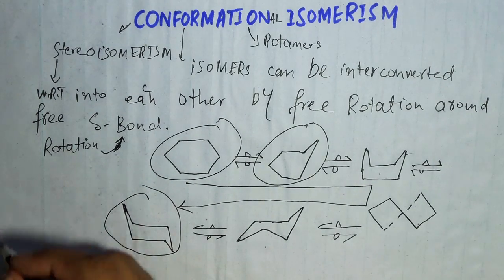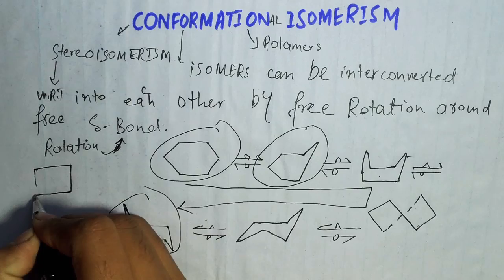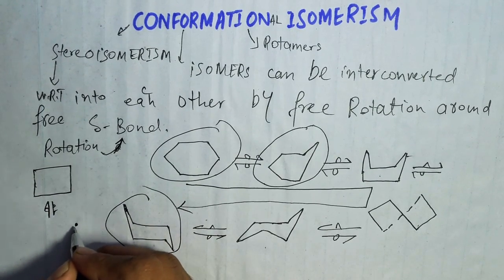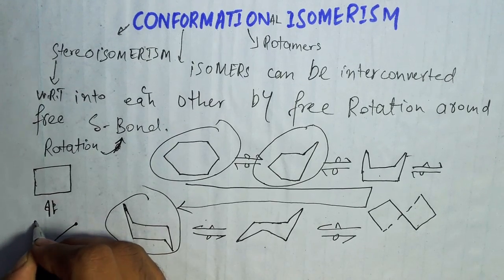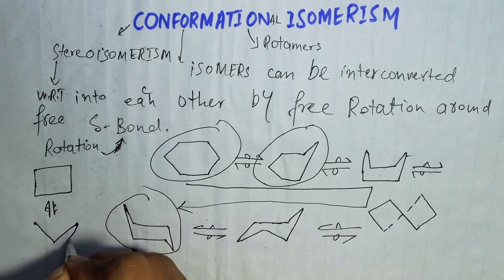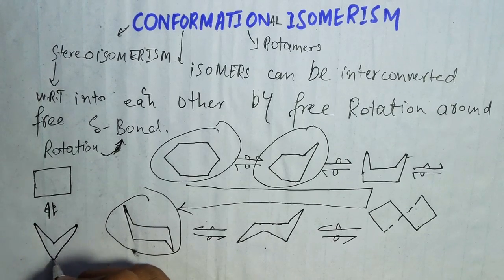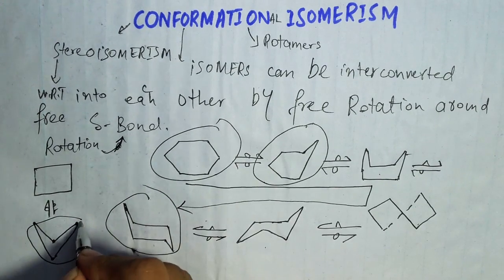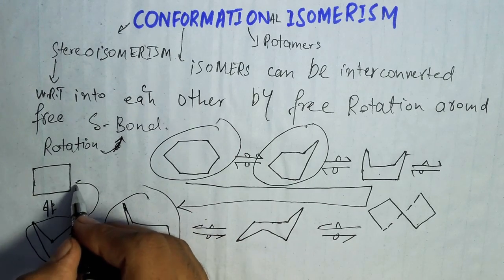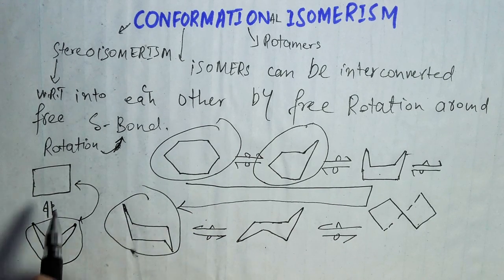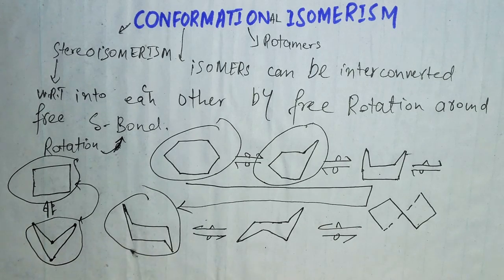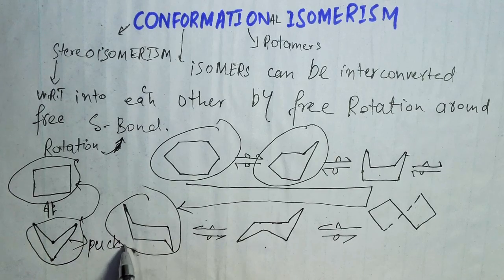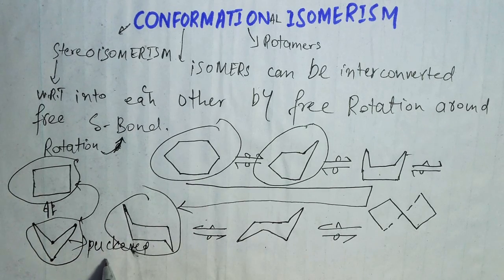We have another example: cyclopentane. When I flip cyclopentane, we get a conformation called the puckered conformation. This is the puckered conformation of cyclopentane, and this conformation is more stable compared to the planar conformation. This is the planar conformation, and the puckered conformation is more stable than the planar conformation.